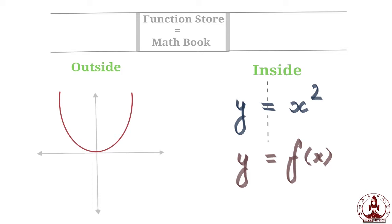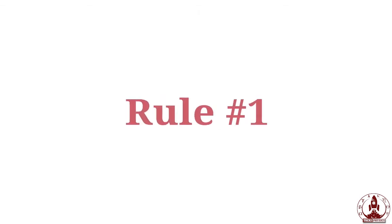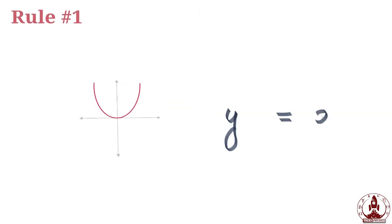Rule number one. You can move this function down or up just by adding or subtracting a number C to Y.